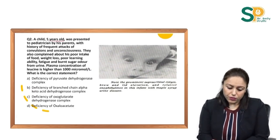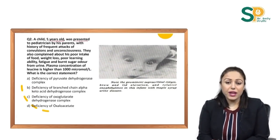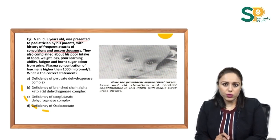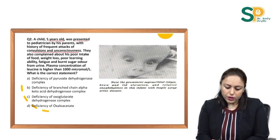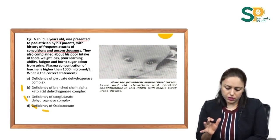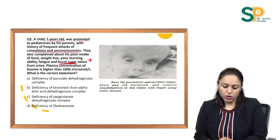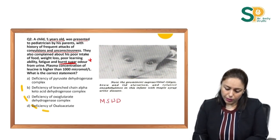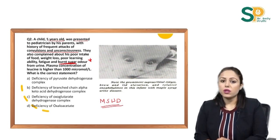Next question: a 5-year-old child was presented to a pediatrician with history of frequent attacks of convulsions and unconsciousness. The brain is affected. Parents also complained about poor food intake, weight loss, poor learning ability, and fatigue. The specific clue is a burnt sugar-like odour from urine — very specific and commonly asked. This is a case of MSUD, maple syrup urine disease.